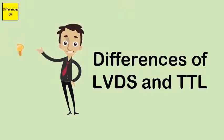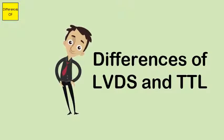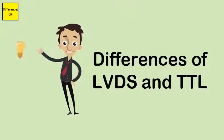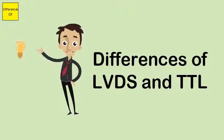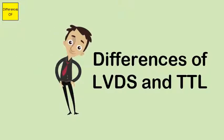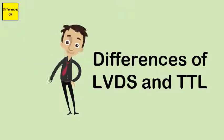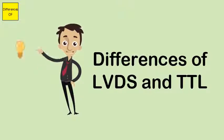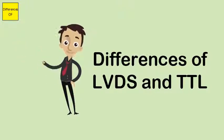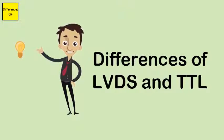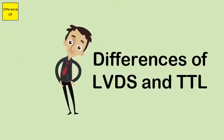TTL cannot use lower voltage levels, whereas LVDS can use lower voltage levels. TTL has less resistance to interference, while LVDS has more resistance to interference.